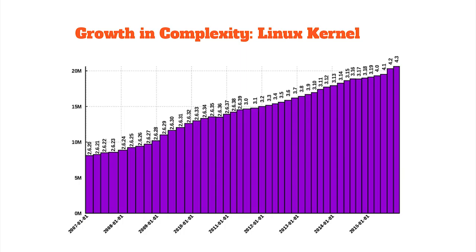So we're talking many multiples of William Shakespeare's lifetime going into something like this. Here is the number of lines of code as a function of time for the Linux kernel. As they keep releasing new versions, from 2.6.20 to 4.5, it just keeps growing — you're increasing the complexity of something that can be attacked. The Linux kernel has been attacked successfully many times, and they patch it and move on. It's extremely good software, but it's still vulnerable to attack.